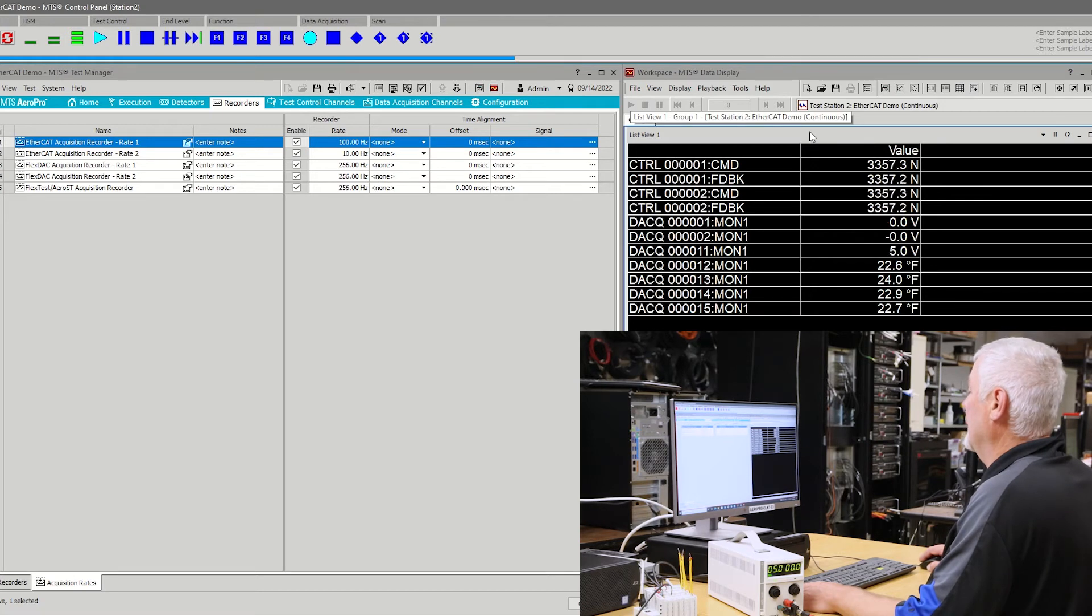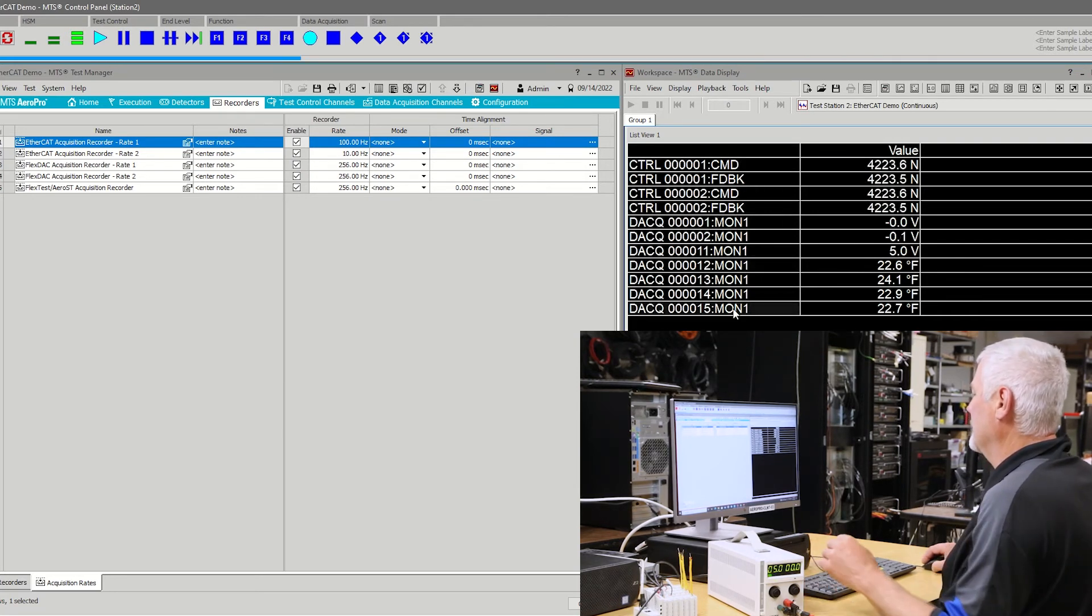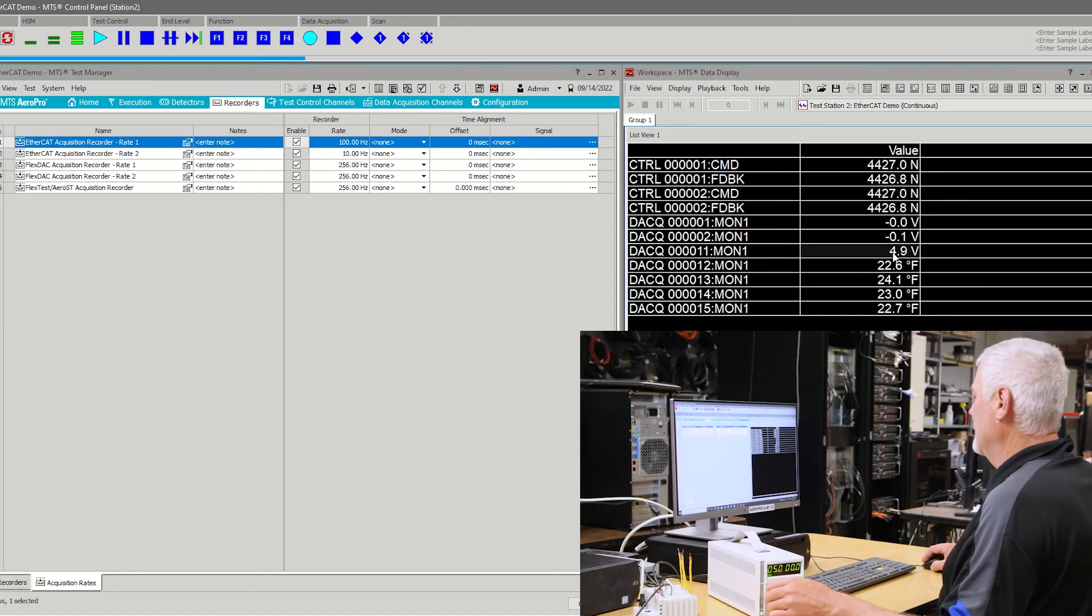Here, I'm using the Aeropro data display application to display the continuous data stream. I have control data, FlexDAC data, and the EtherCAT data. You can see as I adjust the voltage, the input updates.